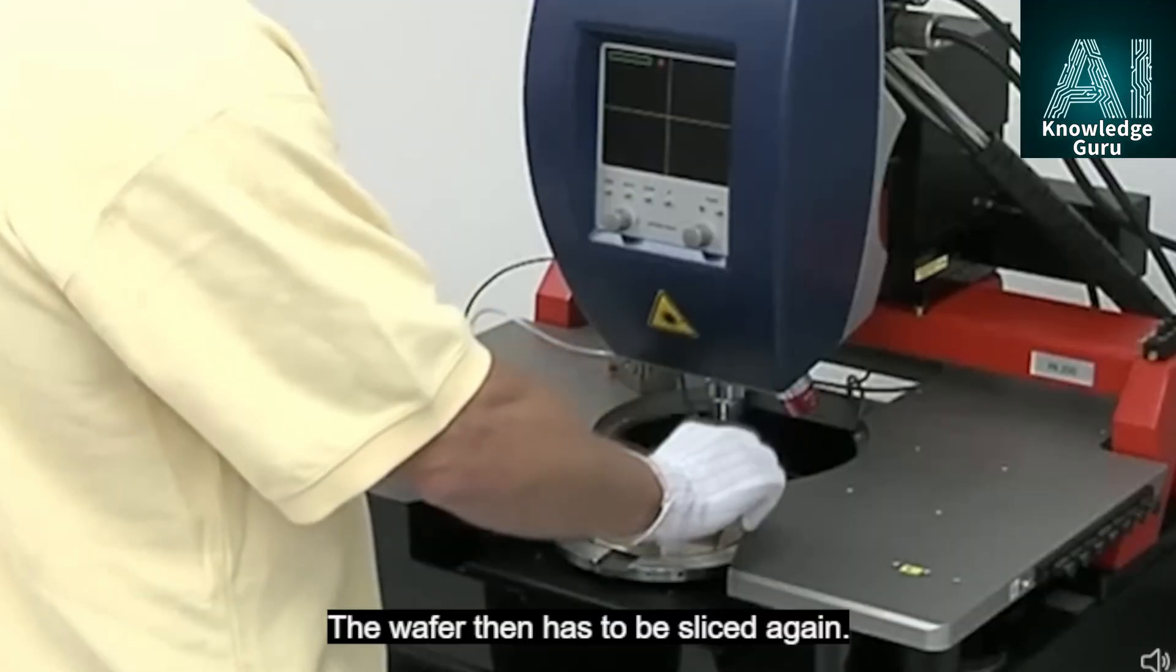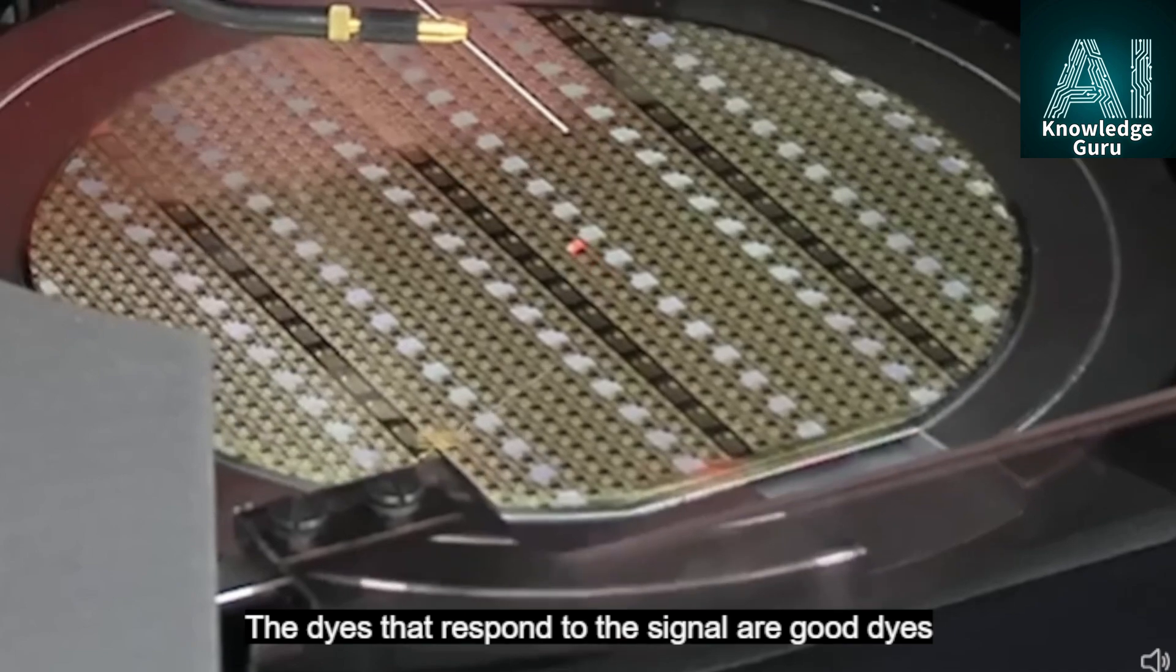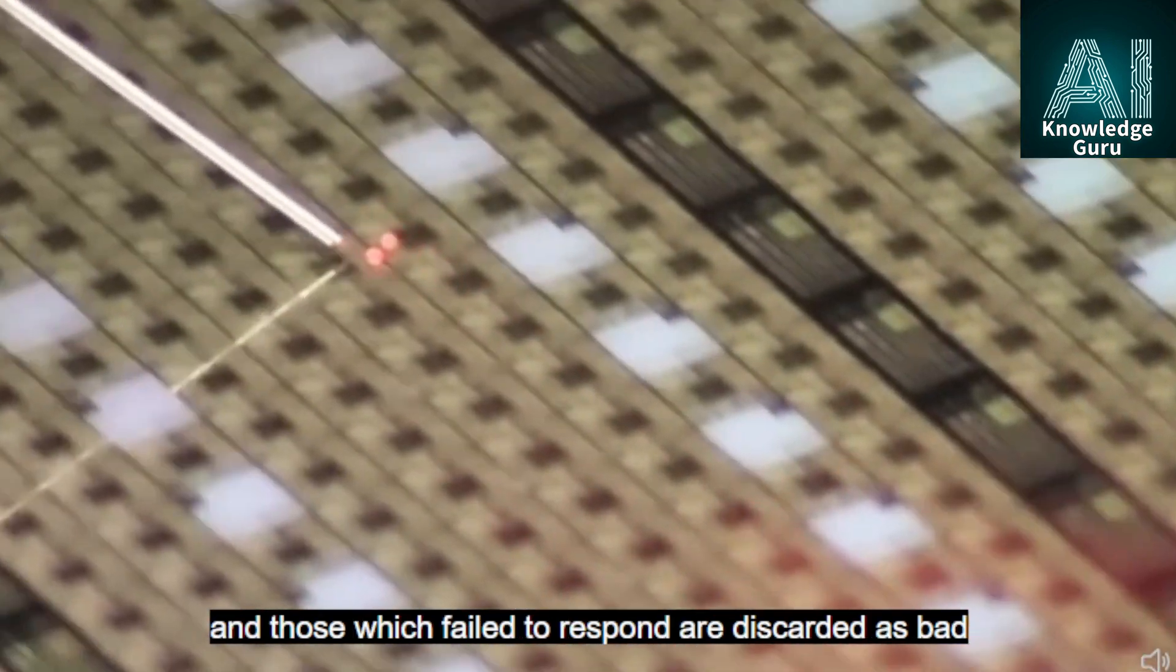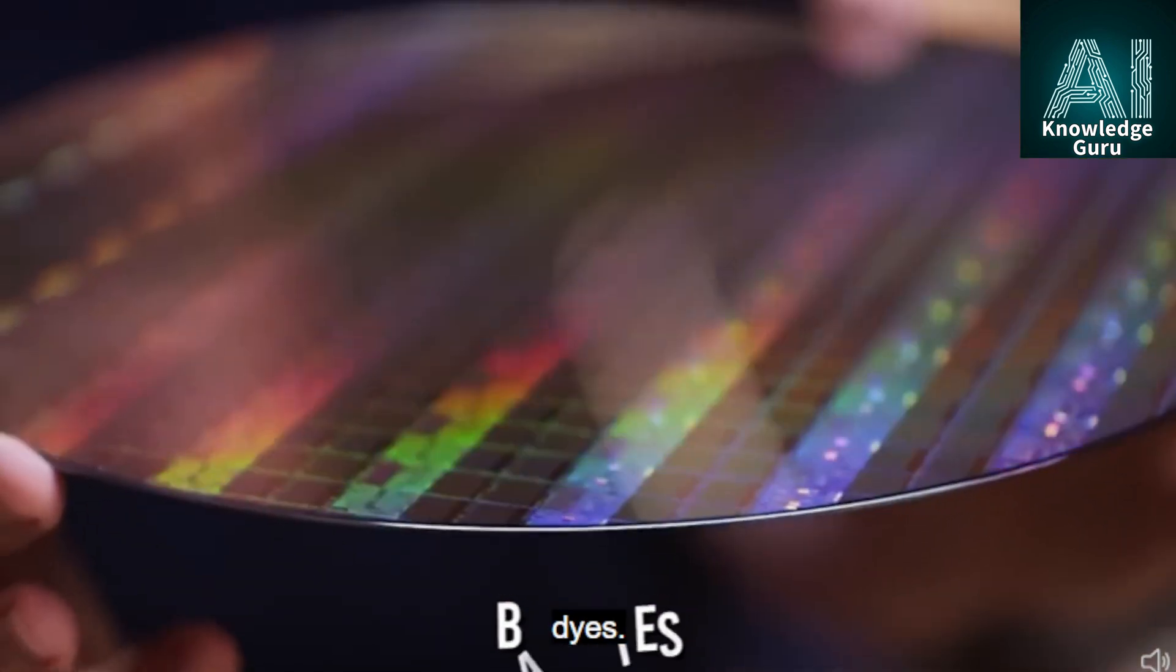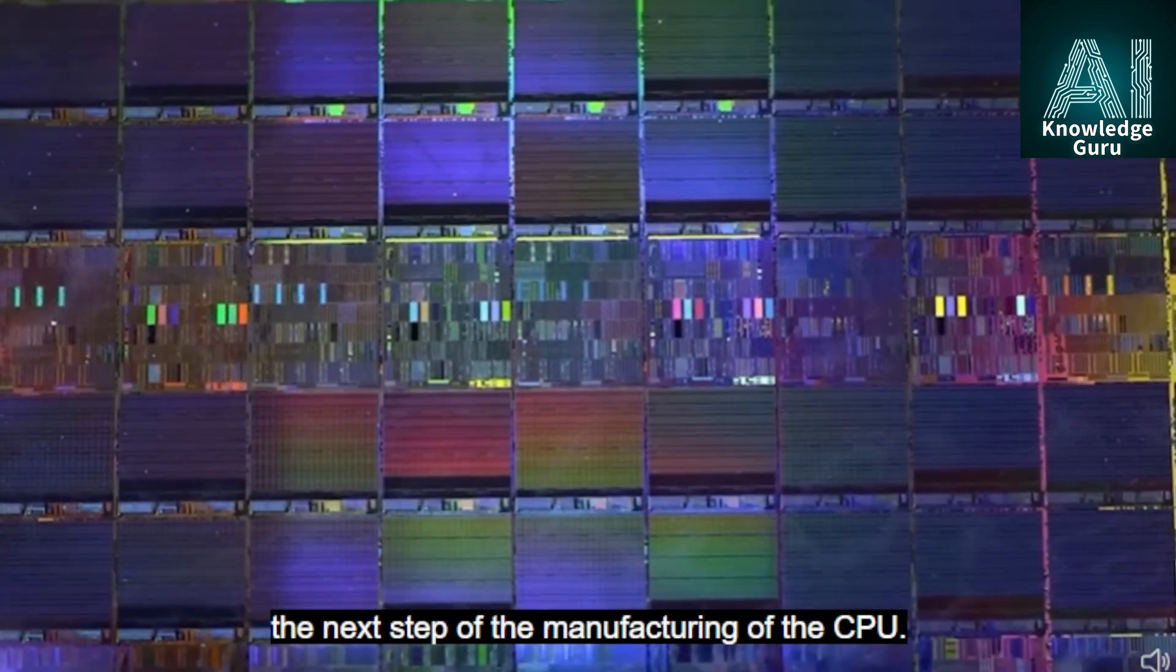The wafer then has to be sliced again. The slices are termed as dies. The dies that respond to the signal are good dies, and those which fail to respond are discarded as bad dies. The good dies passing the test are allowed to enter the next step of the manufacturing of the CPU.